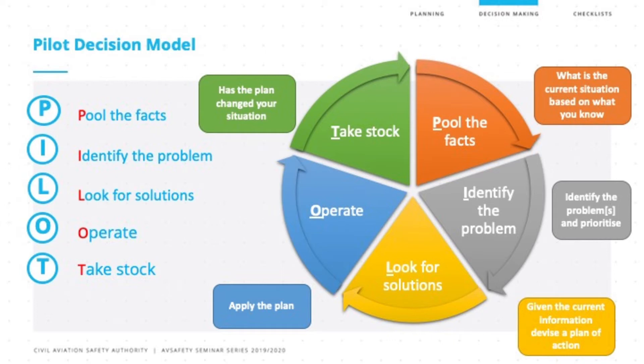The tool we're going to use is called PILOT, and we're going to apply it to a case study we've already looked at — the aircraft flying from Portapunker in Victoria through to Parafield in South Australia. P stands for Pooling the facts, I is Identifying the problem, L is Looking for solutions, O is to Operate, and T is to Take stock. We almost do this intuitively — you can almost apply the aviate, navigate, communicate framework to the PILOT model. Those familiar with decision-making models may recognise terms such as GRADE or DECIDE, which use similar principles.